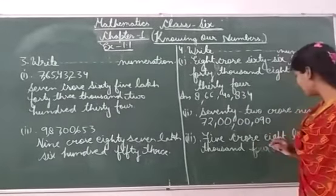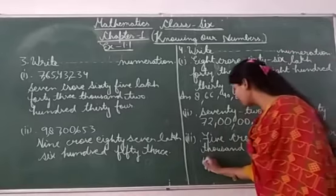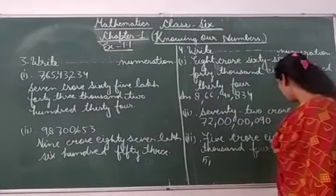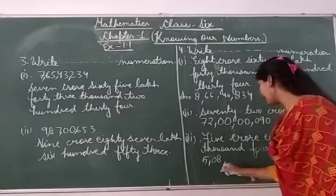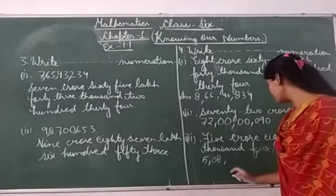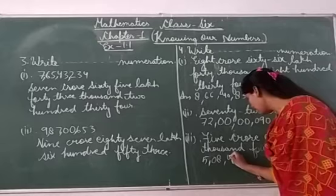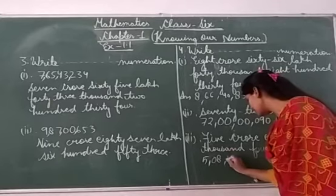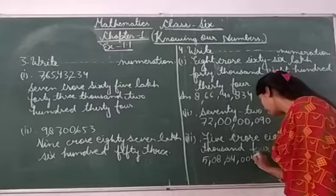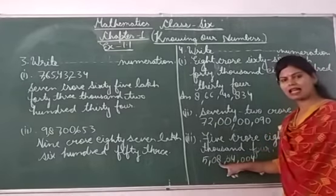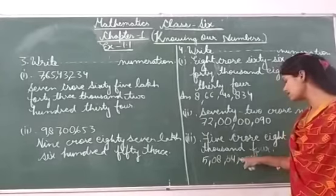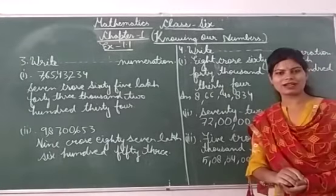So the next is 5 crores, 80 lakhs, 84 thousand, 4. Students?